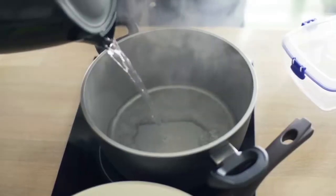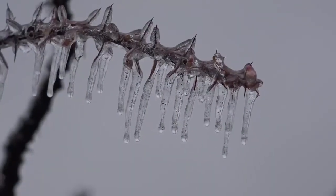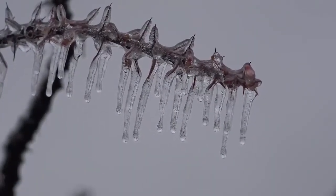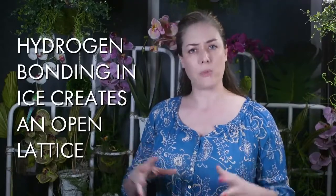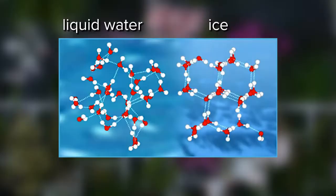Liquid water is more dense than water vapor, but when water molecules cool down and slow down even more, a strange thing happens: hydrogen bonds lock the molecules into a very open lattice formation. There is a lot of space between the water molecules in solid ice — more space than in the liquid form, which had fewer hydrogen bonds. This is why solid ice floats on top of liquid water.